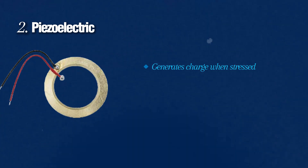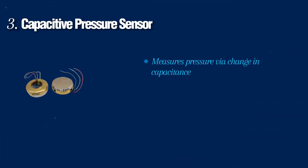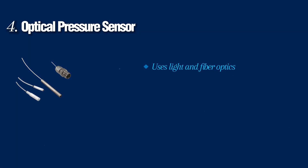Third is the capacitive pressure sensor, which measures pressure via a change in capacitance. Being highly sensitive, it is used in low-pressure applications. Fourth is the optical pressure sensor, which uses light and fiber optics to measure pressure. It is good for harsh environments and explosion-prone areas.